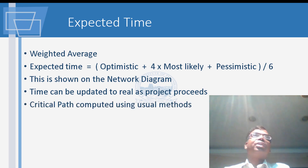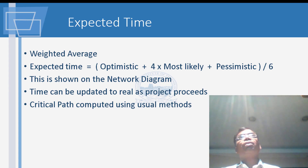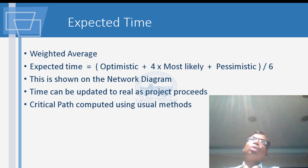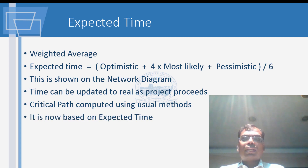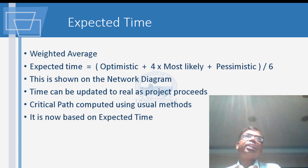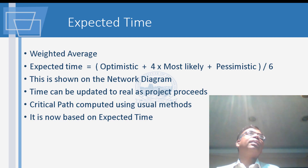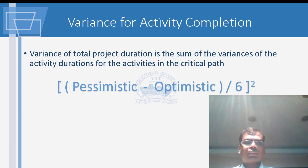The critical path can be computed using the usual forward and reverse pass method. If you input progress in real time, the software uses actual completion data instead of the originally estimated times. This reduces to an expected time, allowing more dynamic updates. Variance tells you how much scatter there is between expected and actual outcomes.